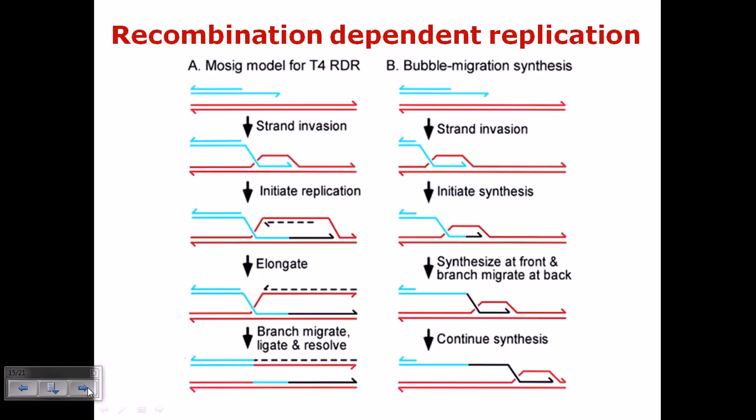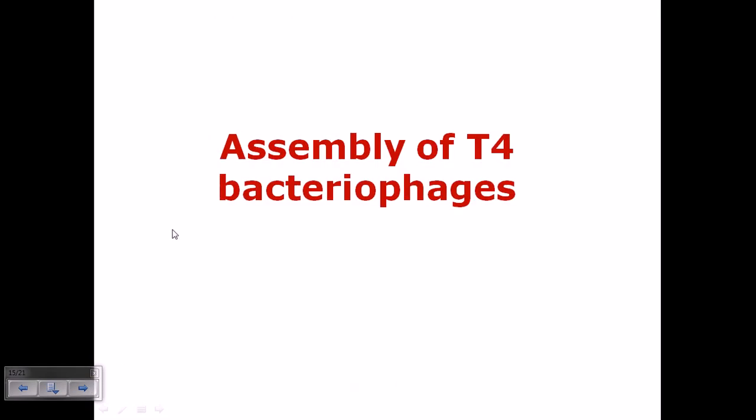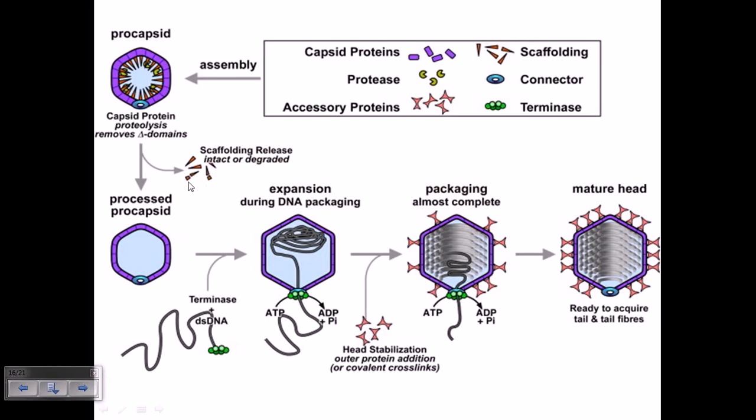During this second phase of T4 phage replication, let's talk about the assembly of T4 bacteriophages. Before assembly, they must produce all the different proteins required. The proteins majorly important are called capsid proteins,